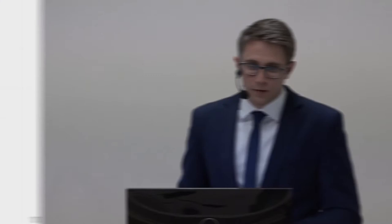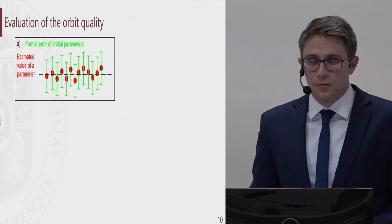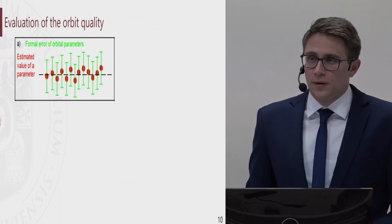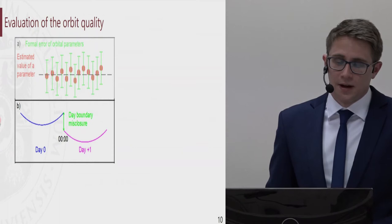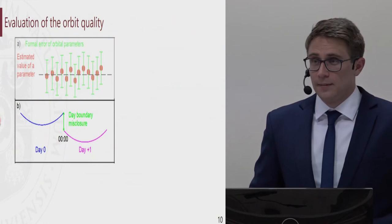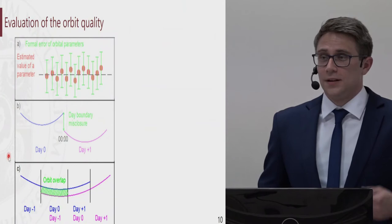This brings us to the methods of evaluating orbit quality. We can analyze the formal errors of the orbital parameters, which together with other formal errors provide information about the solution precision. For a one-day orbital arc, we can calculate the day-boundary misclosures, which are usually calculated for the least stable part of the arcs. If we have longer arcs, we can calculate the orbit overlap — this is essentially an extension of the previous method, calculated for the whole day, for instance, in 15-minute intervals.